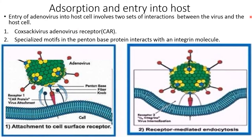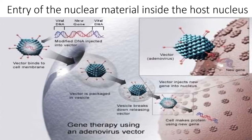The entry of adenovirus into the host cell involves a two-step interaction between the virus and the host cell. The Coxsackie virus adenovirus receptor, also called the CAR protein, is a specialized motif. The penton base protein interacts with the integrin molecule present in the receptor. Attachment to the cell surface receptor is followed by receptor-mediated endocytosis, leading to entry of the nuclear material inside the host cell.